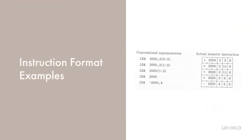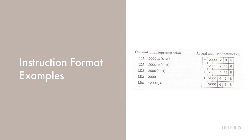Here we see a comparison of the conventional representation, which is closer to assembly language, compared with the actual numeric instructions, which is closer to machine language. The instruction LDA 2000,2(0:3) can be read as: load A with the contents of location 2000 indexed by 2 with the 0 to 3 field.